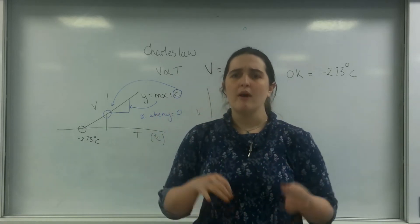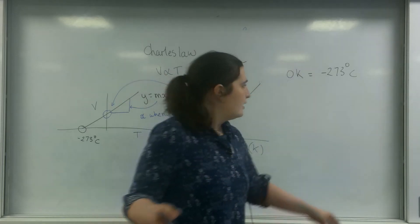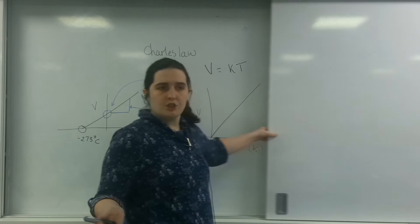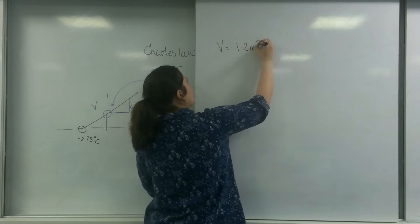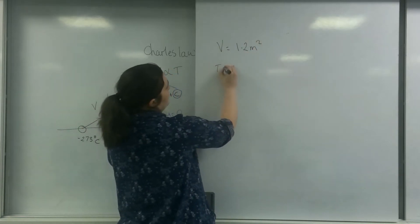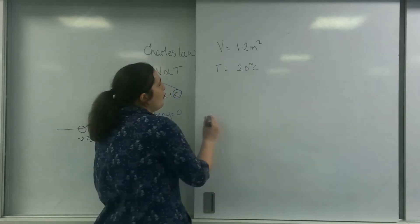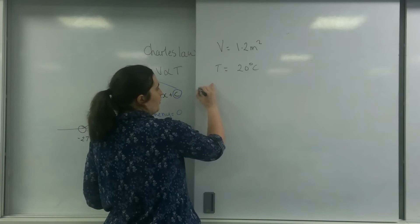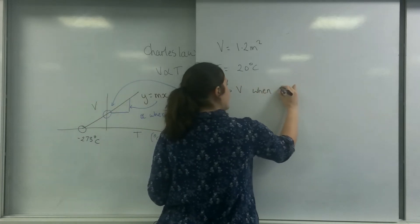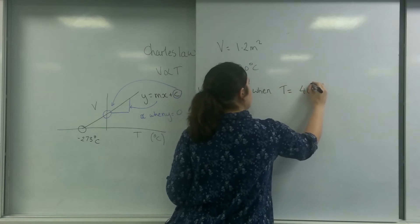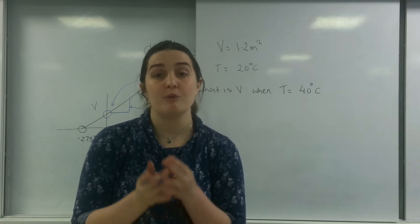And what I want to show you now is why we have to use Kelvin instead of degrees C. I'm going to have a situation here. I have a volume of 1.2 meters cubed at a temperature of 20 degrees C. I want to know what is V when T equals 40 degrees C. And first of all, I'm going to do it wrong. I'm going to show you what it looks like with degrees C.